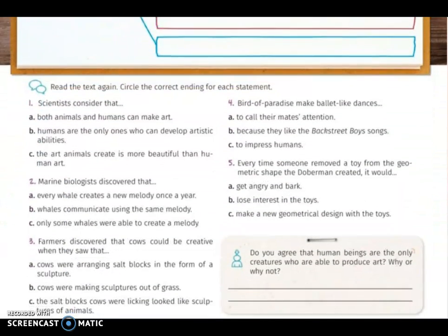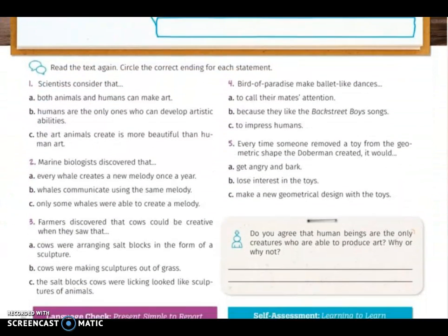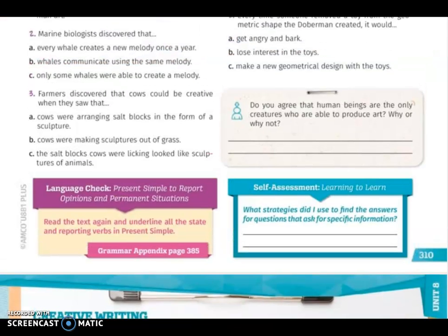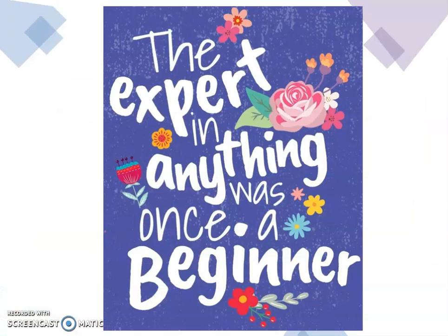In the second activity, if necessary, read the text again and circle the answers. Finally, you have to give your opinion about whether you agree that human beings are the only creatures able to produce art, and why or why not. This is all the work for this week, guys. Remember: the expert in anything was once a beginner. Have a nice week, bye bye!